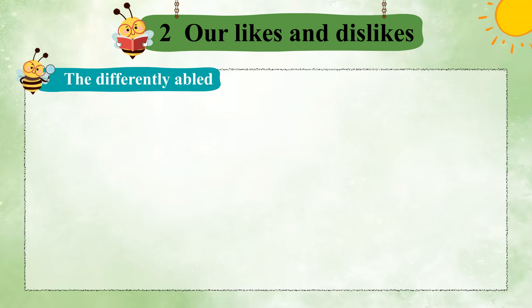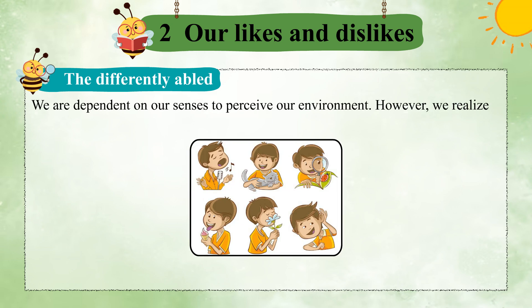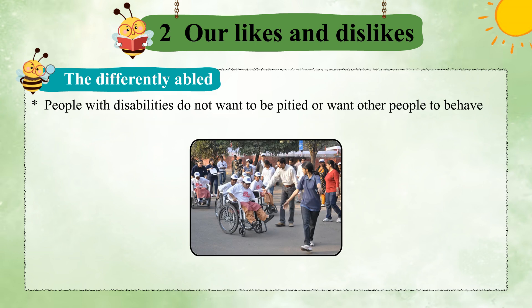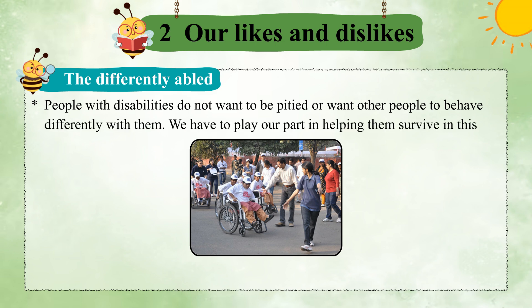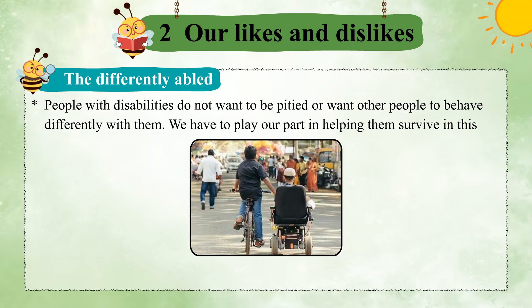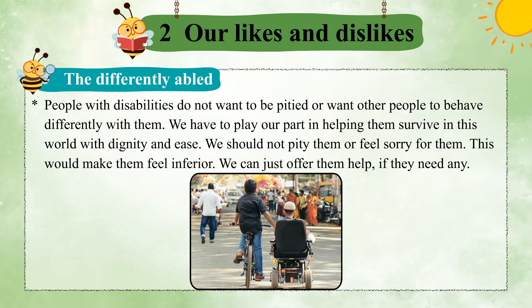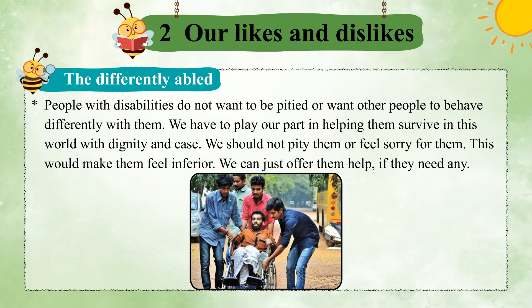The Differently Abled. We are dependent on our senses to perceive our environment. However, we realize their importance only when one or more of our senses fail to work. People with disabilities do not want to be pitied or want other people to behave differently with them. We have to play our part in helping them survive in this world with dignity and ease. We should not pity them or feel sorry for them, as this would make them feel inferior. We can just offer them help if they need any.